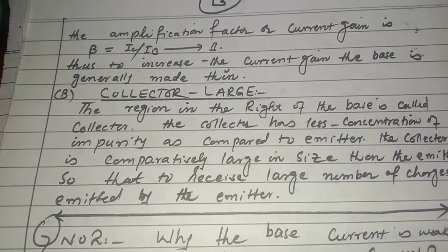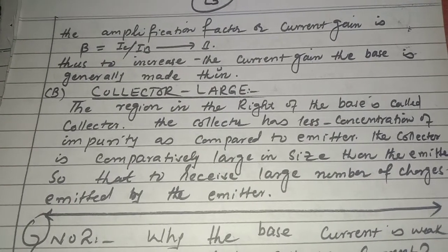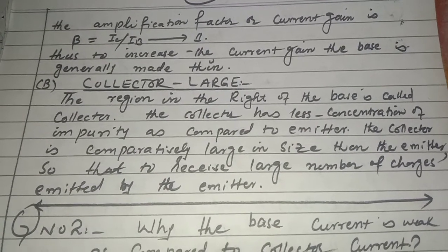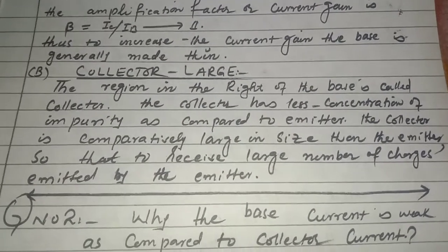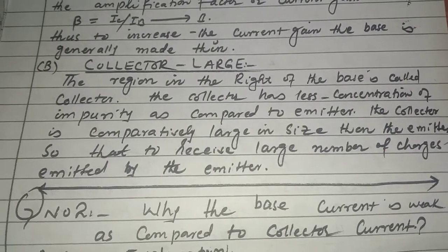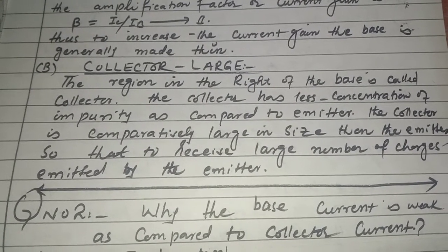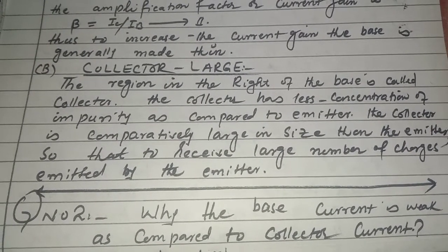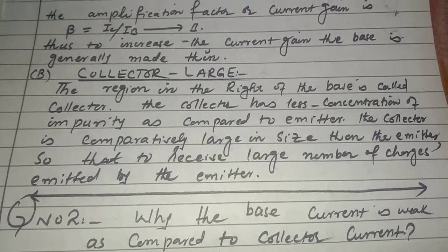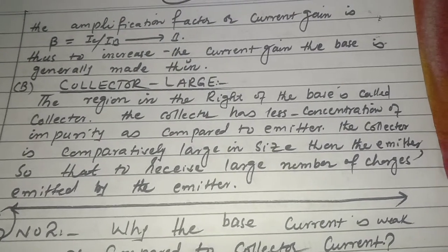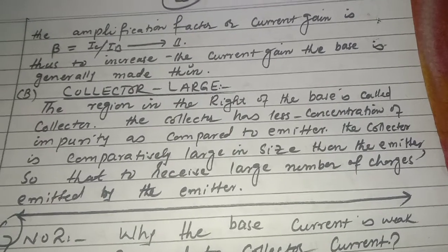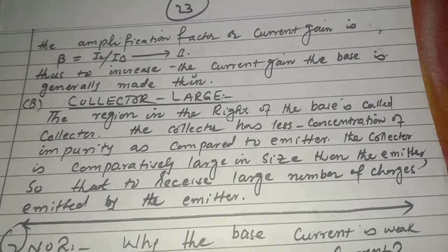Second: collector large — the region to the right of the base is called the collector. Transistor mein teen chizein hoti hain: emitter, base, collector — they are also called three-terminal devices. The collector has less concentration of impurity as compared to emitter. The collector is comparatively large in size than the emitter.